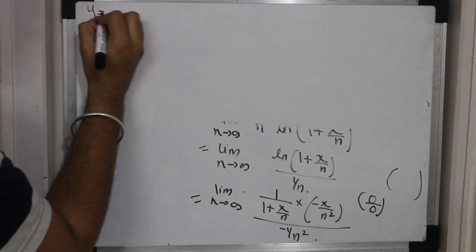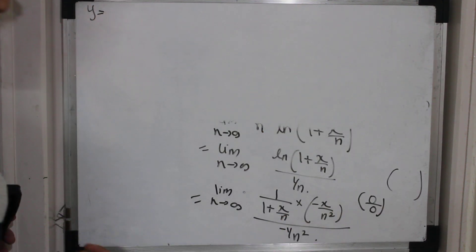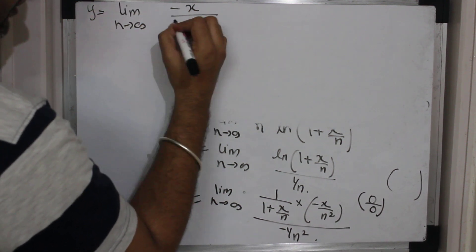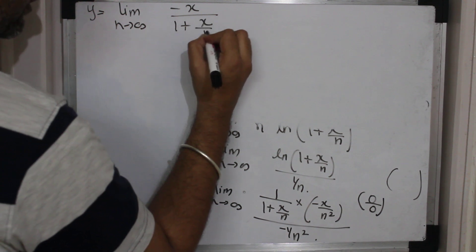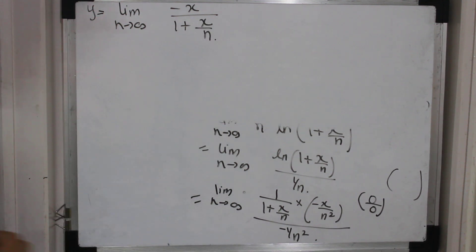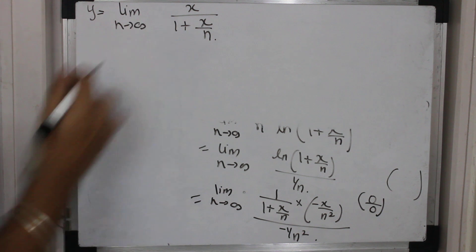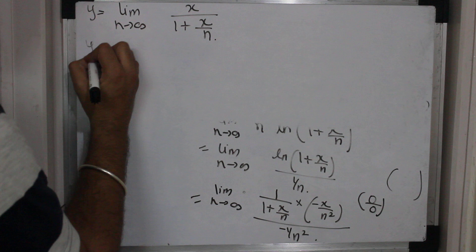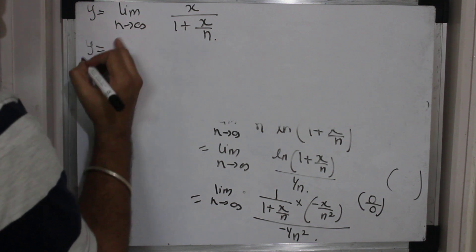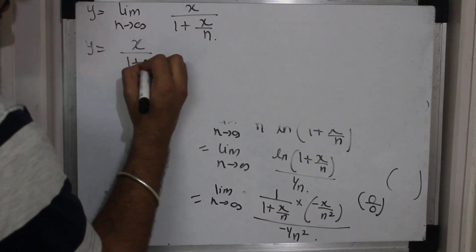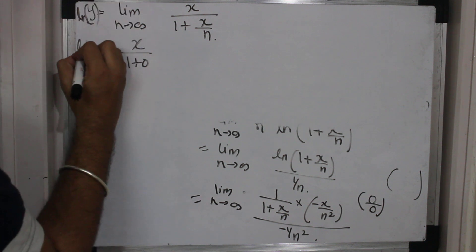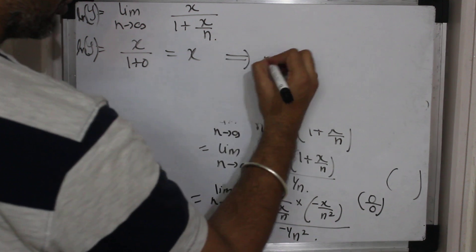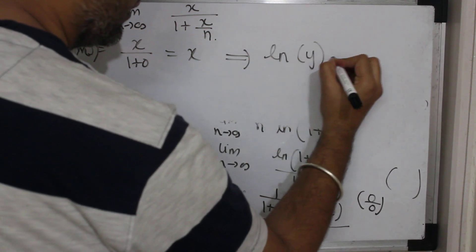If you try to simplify this further: the minus 1/n squared and minus 1/n squared cancel away, giving the limit as n goes to infinity of minus x upon (1 + x/n). The minus signs also cancel, and now you can separate the limit using arithmetic operations. This gives x upon (1 + 0), so ln(y) is nothing but x.